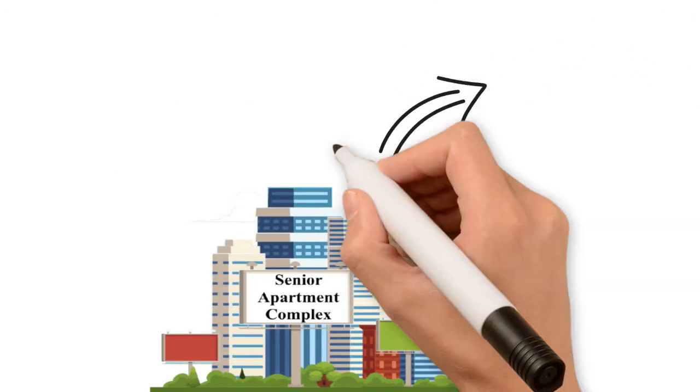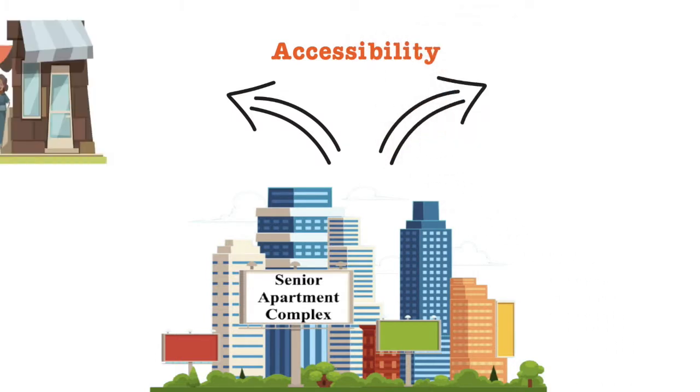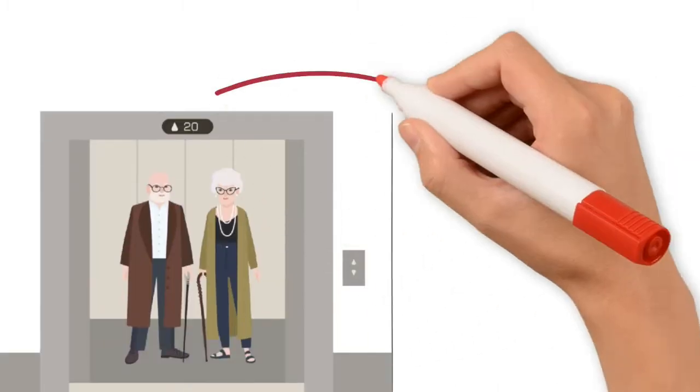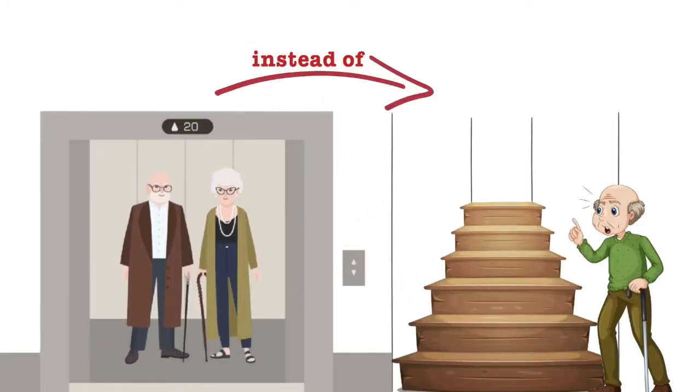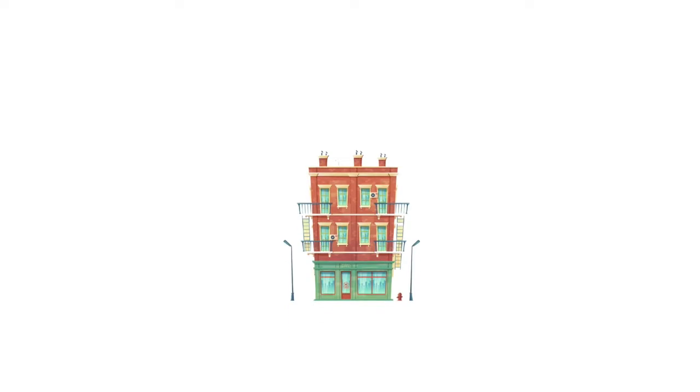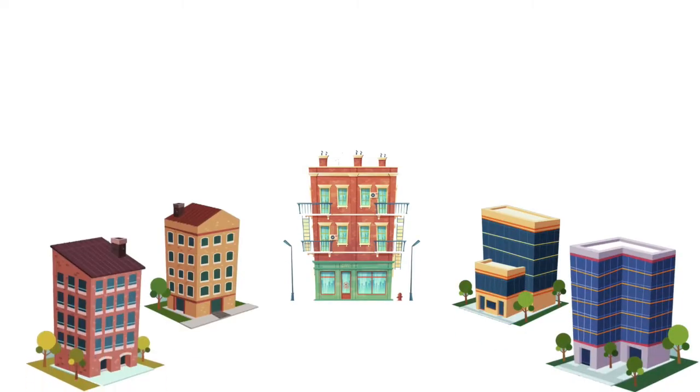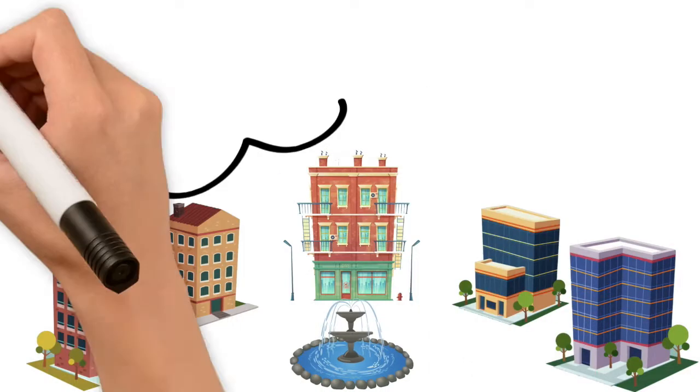The goal of a senior apartment complex is to provide accessibility in common and private areas. Many senior apartments use ramps and elevators instead of multiple flights of stairs. The apartment homes are usually one-story versus multi-level apartments that one might find in a regular apartment complex.